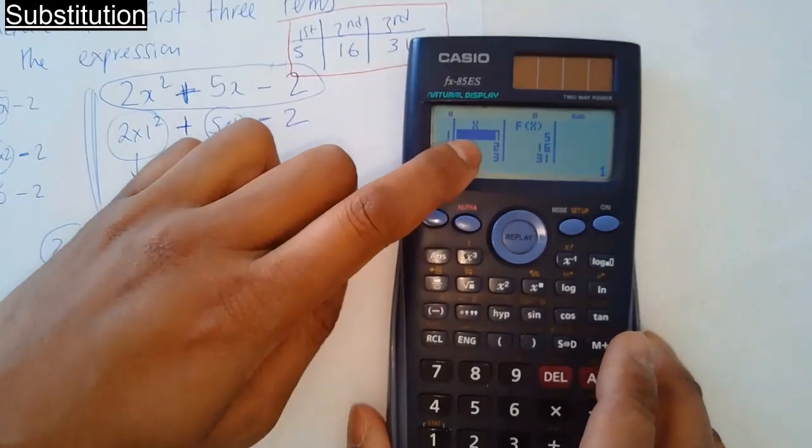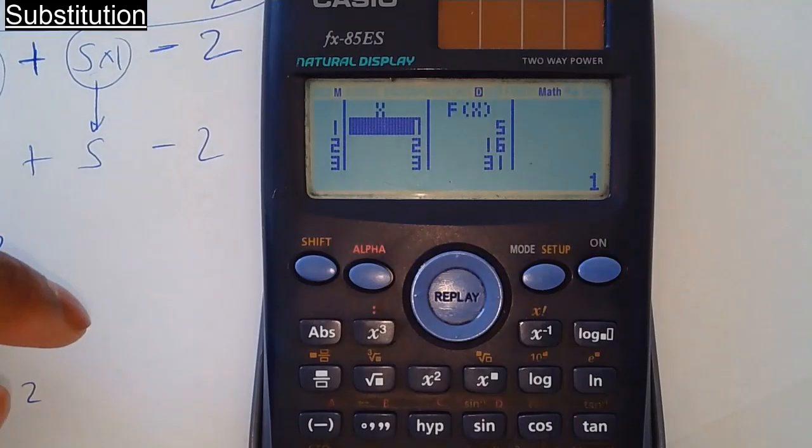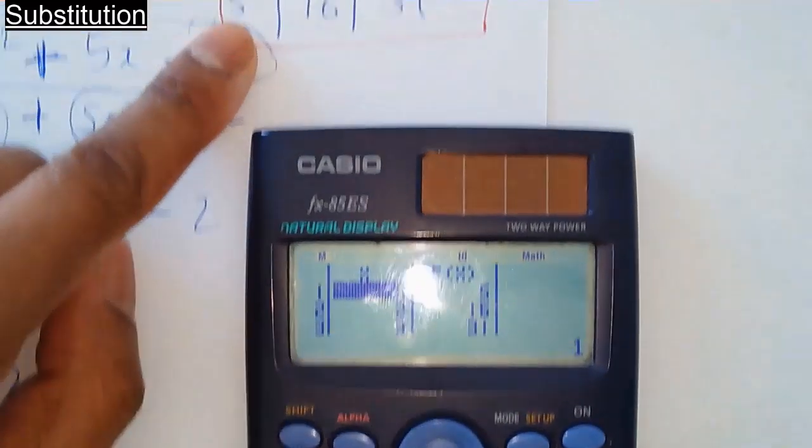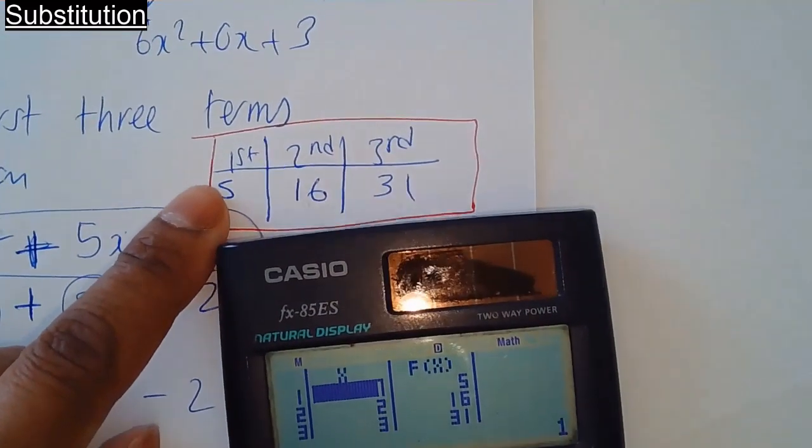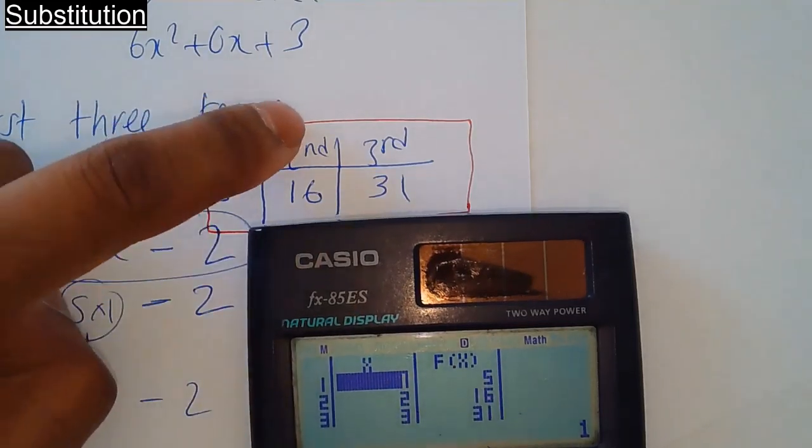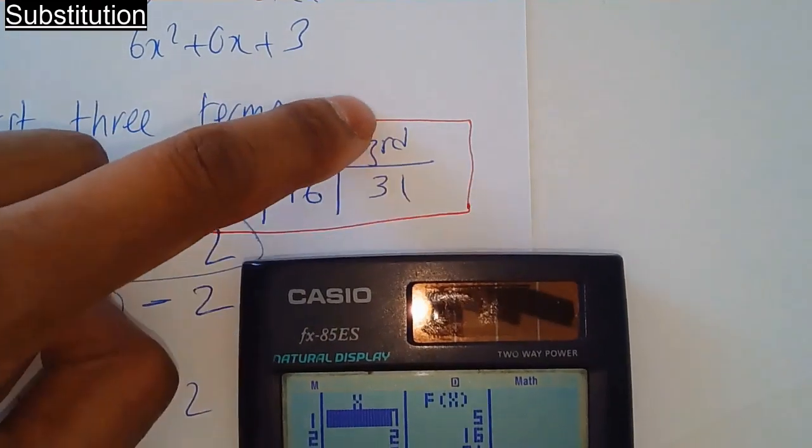So there you go, the table is going downwards. The first one is 5. There you go, the first one is 5. The second one is 16. Second one is 16. Third one is 31. Third one is 31.